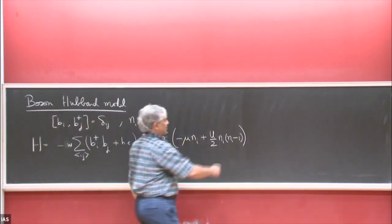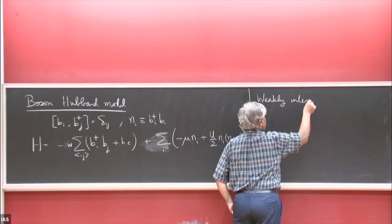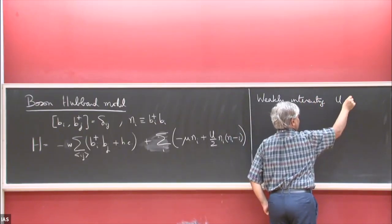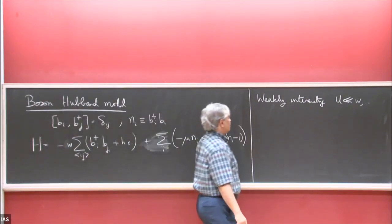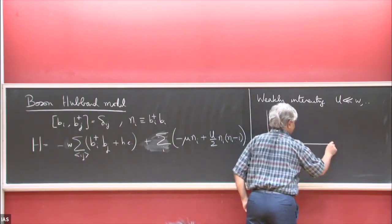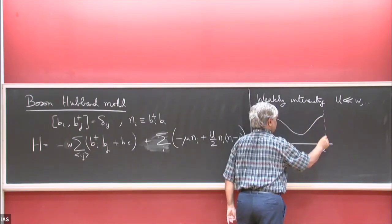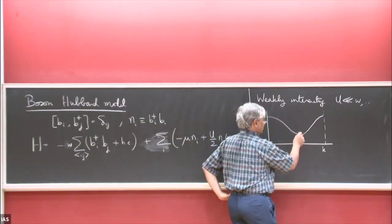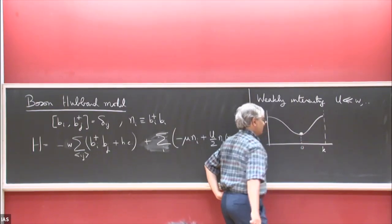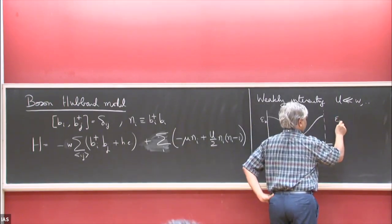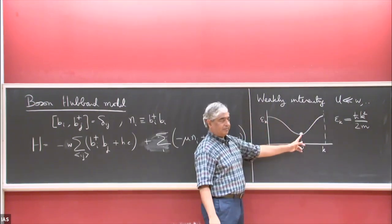To begin with, I'm going to consider the weakly interacting case, where U is much, much less than W, and also some other parameters that depend on the density that we'll specify more carefully later. So there's some dispersion for the bosons, which you get by taking the Fourier transform of W. There's a dispersion like this in the Brillouin zone. If U is exactly zero, the bosons will basically all occupy the zero-momentum state — the lowest energy state. Near this point, the dispersion is quadratic at the bottom of the band.